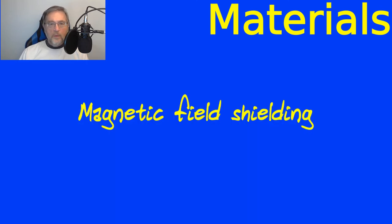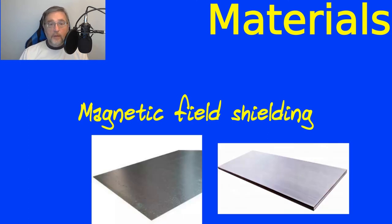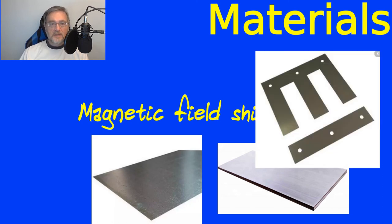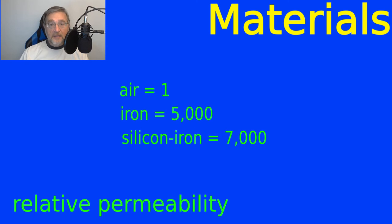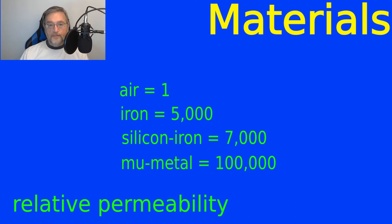To shield from magnetic fields, we need to use a material that is permeable to magnetic fields. Iron and steel are the obvious examples, but there are some alloys that are particularly good for magnetic shielding, like silicon iron and mu metal. Just to give you an idea, the relative permeability of air is defined as 1. Iron with 0.2% impurities has a relative permeability of 5,000. Silicon iron has a permeability of 7,000. Mu metal has a permeability of 100,000. Depending on how thick we can make the shield and the amount of magnetic energy we want to stop, we choose one solution over the other.